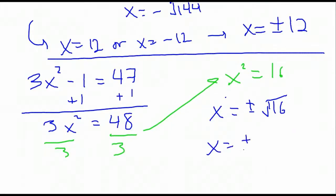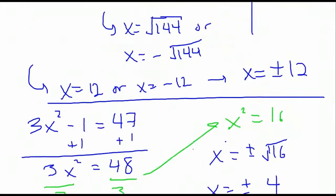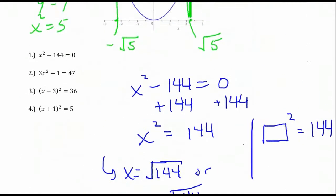It's a little different approach when you're using the square root method than when you're solving by factoring. Solving by factoring, we want to put zero on one side, everything else on the other. Here we want to isolate the term being squared, then apply the square root property to make our conclusion.